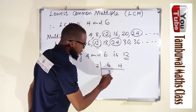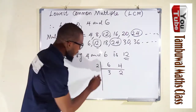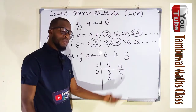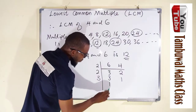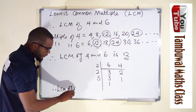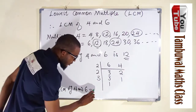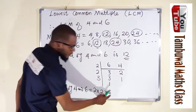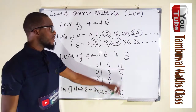Two goes into six three times, and two goes into four two times. Two cannot go into three, but it can go into two one time — so we skip three and bring it down. Once you reach one, you stop. The only prime that goes into three is three, so we use three. Therefore the LCM of four and six equals two times two times three, which is four times three, equal to twelve.